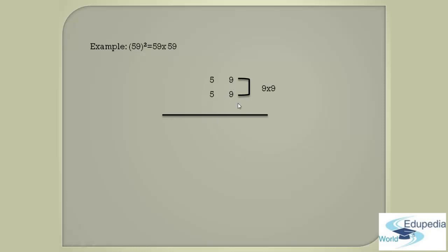So, if you multiply the digits that are in the ones place — 9 into 9 — you will get 81. You just take down that 81 below the horizontal bar and write it on the right side.